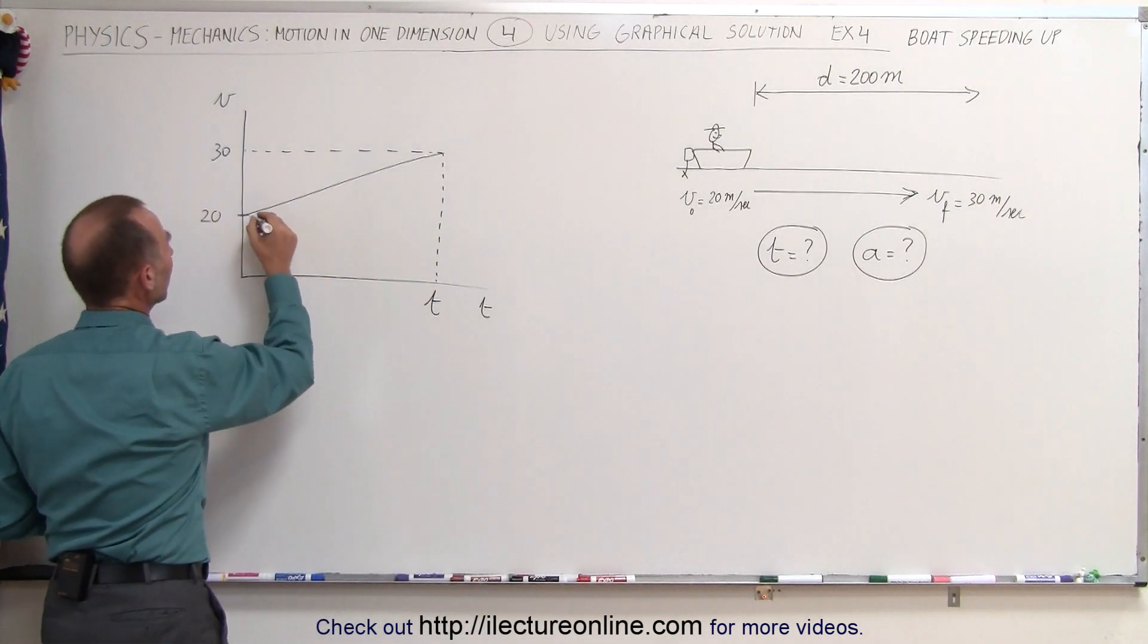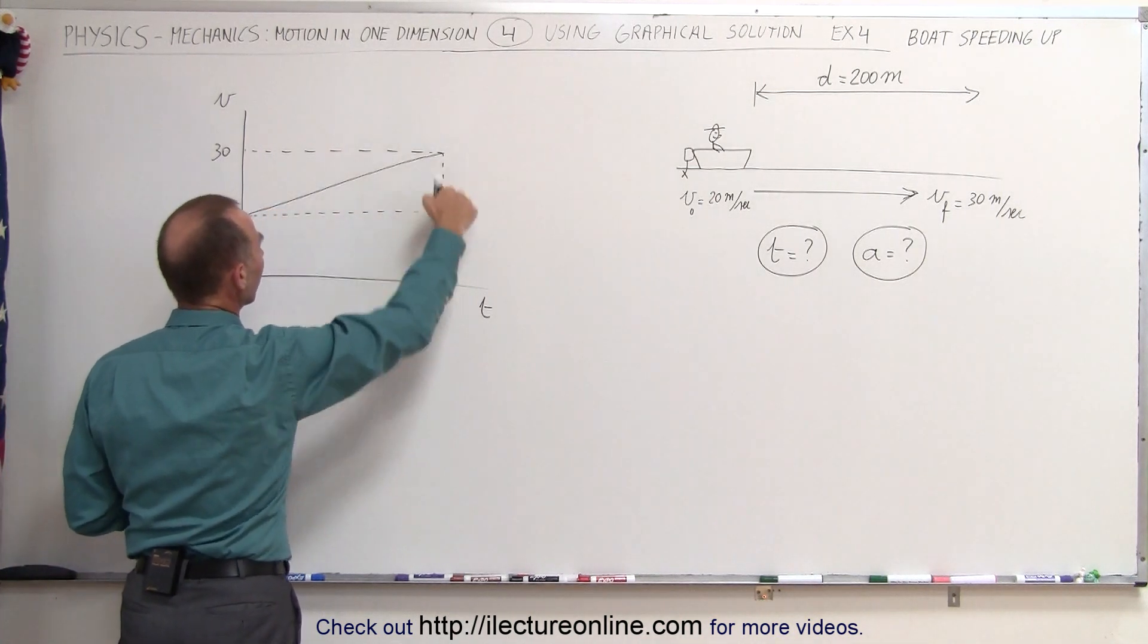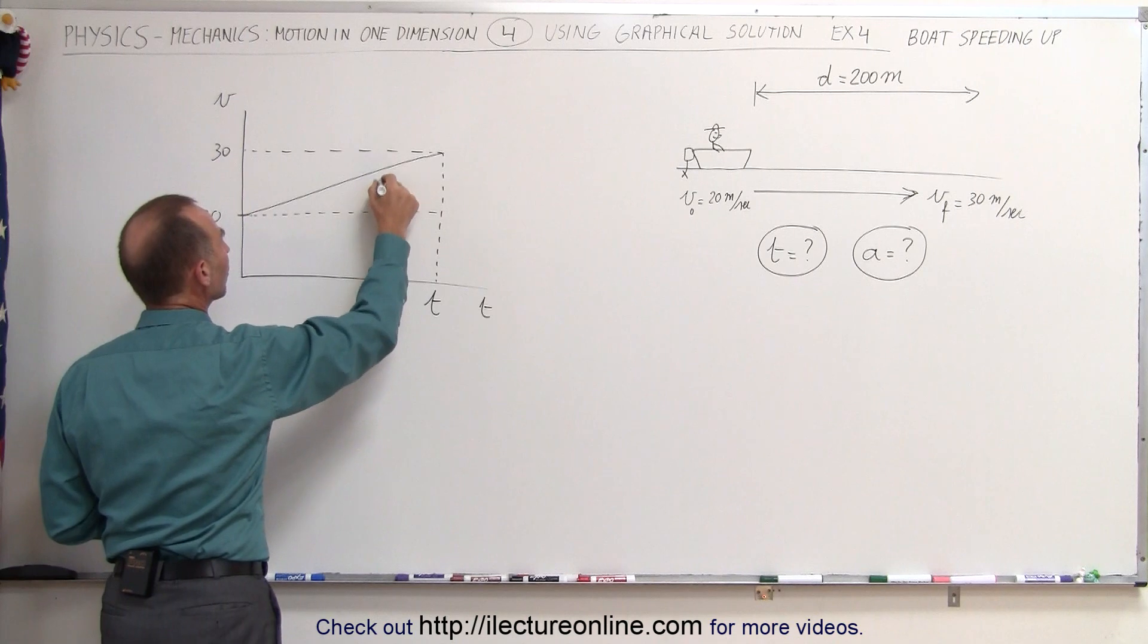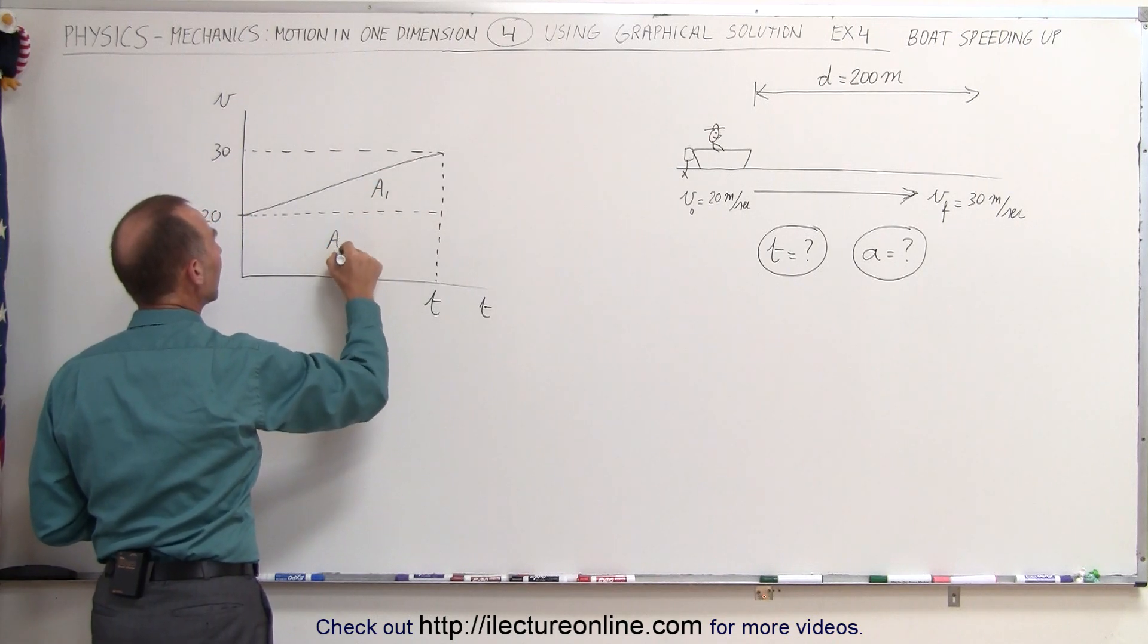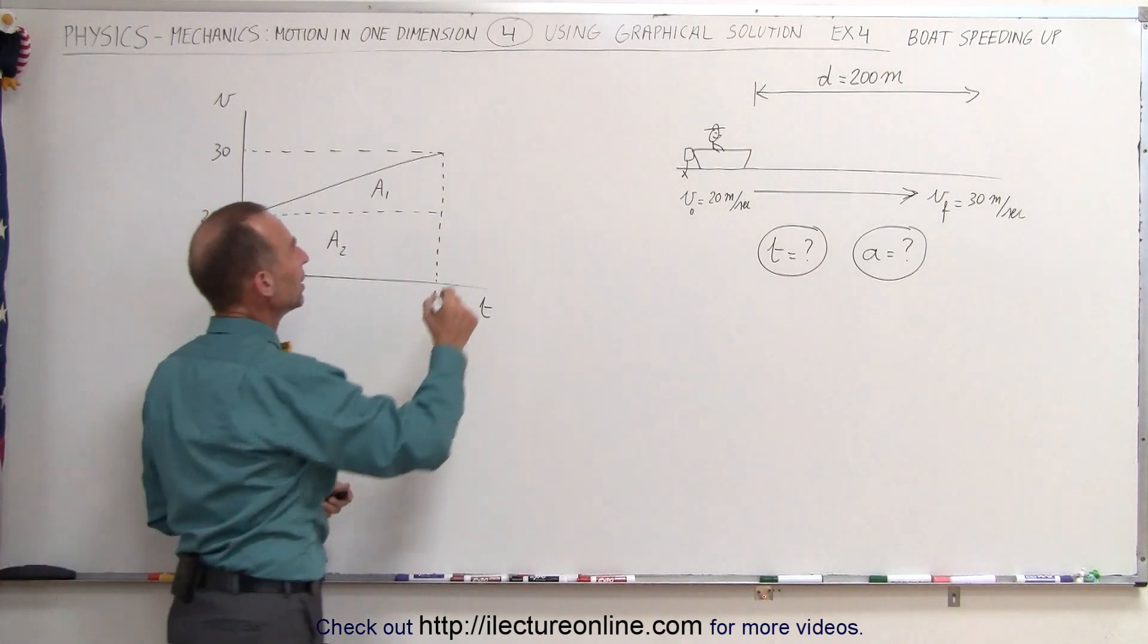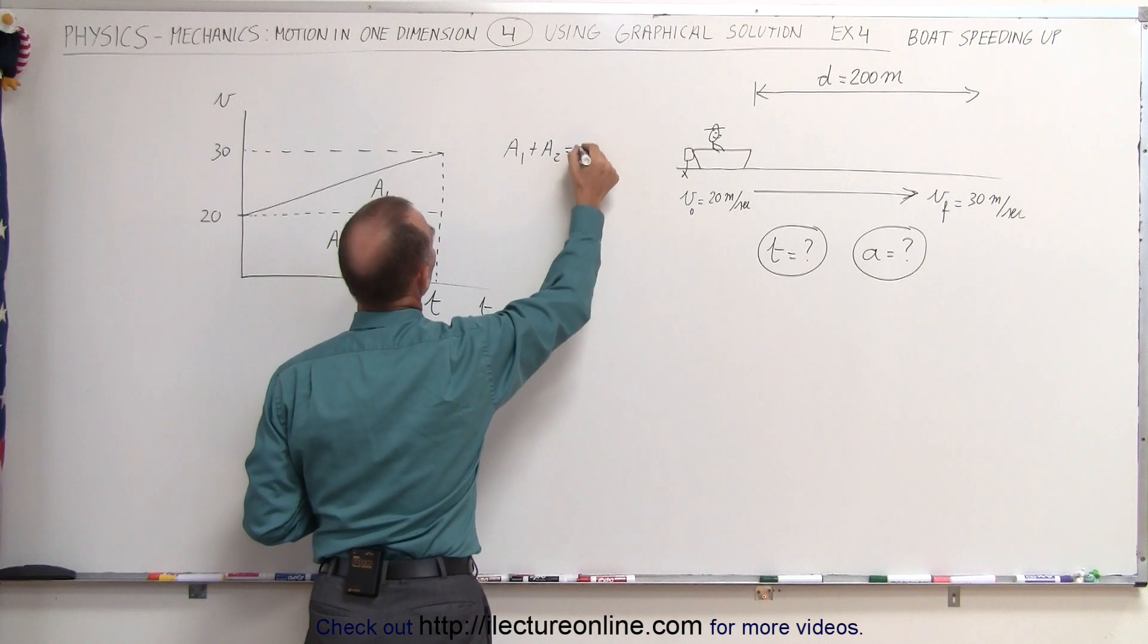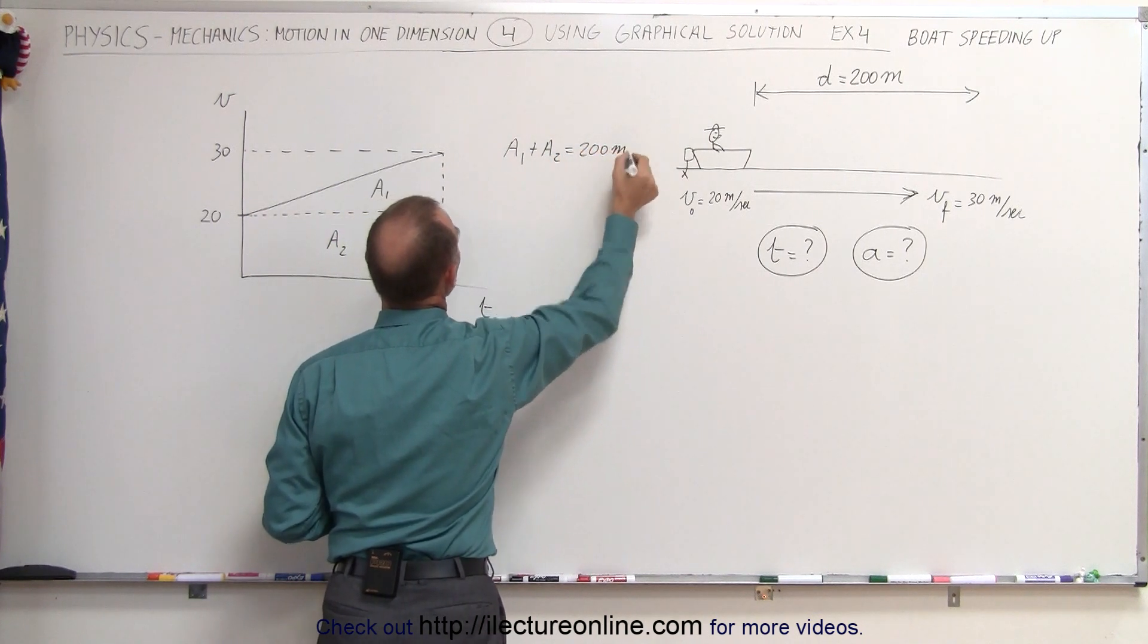To find the area here we're going to divide this into two areas. The triangle area and the rectangle area. Let's call this a1 and let's call this a2. And we know that the total area a1 plus a2 must add up to the 200 meters. So we can say that a1 plus a2 equals 200 meters.